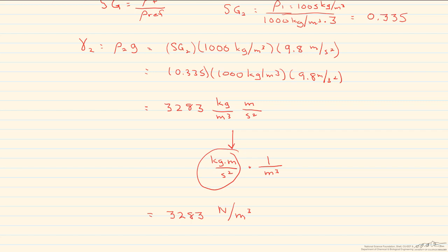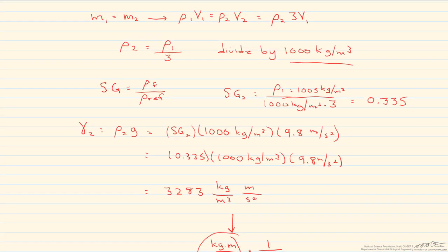Note that we never had to solve for the second density, but if we had to, all we do is take the specific gravity, 0.335, multiply it by the 1,000 kilograms per meter cubed and get 335 kilograms per meter cubed. Or, we also know here, we just have to take that first density and divide it by 3.